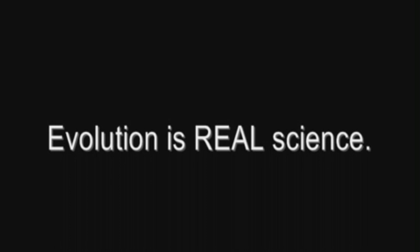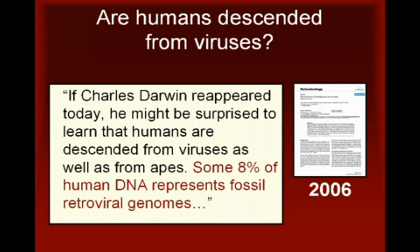The following video demonstrates that the theory of evolution is useful for making sense out of biological observations. According to an article published in the journal Retrovirology in October 2006, if Charles Darwin reappeared today, he might be surprised to learn that humans are descended from viruses as well as from apes. Some 8% of human DNA represents fossil retroviral genomes.